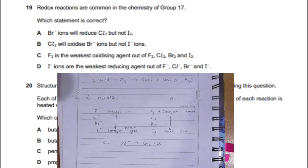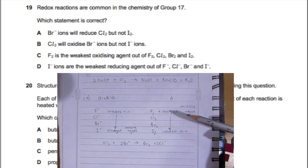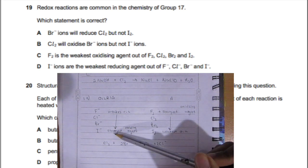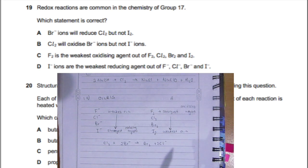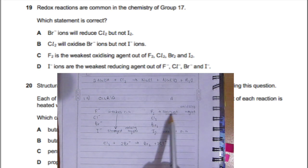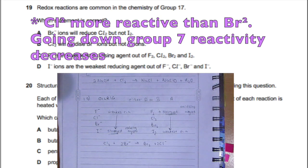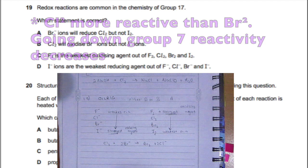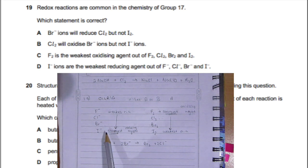Question 19: Redox reactions are common in the chemistry of group 17. Which statement is correct? I drew this out for you. Fluorine to iodine, going down the group, the strength of the oxidizing agent decreases. But the fluoride ion going down the group to the iodide ion, the strength of the reducing agent increases. We're talking about displacement reactions. Part A: Bromide ions will reduce chlorine but not iodine. That is true because chlorine is more reactive than the bromide ion and will displace it.